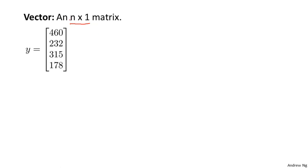n is the number of rows, and one here is the number of columns. So a matrix with just one column is what we call a vector.